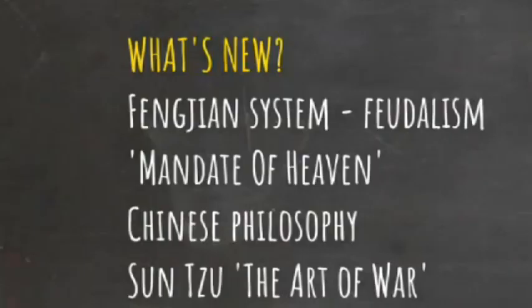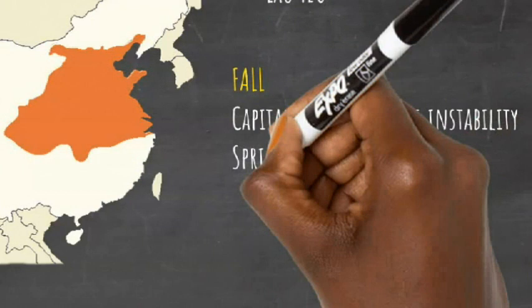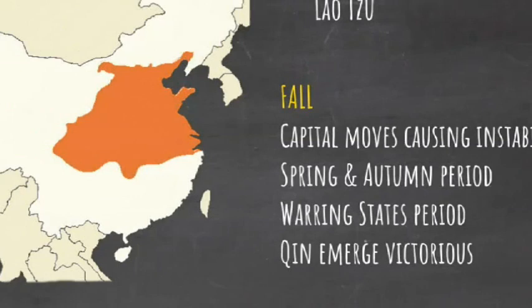With 800 years of history, there are far too many people of significance to know about, but King Wu, the first king, is worth knowing, and Confucius and Lao Tzu are essential. Towards the end of the dynasty, the Zhou moved their capital and their realm became increasingly unstable, with the Zhou ruling in name only while others fought for power, in the so-called Spring and Autumn period and the Warring States period. The ultimate victors of the power struggle were the short-lived but highly influential Qin.